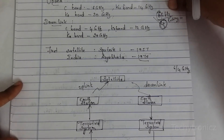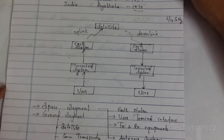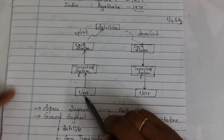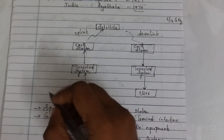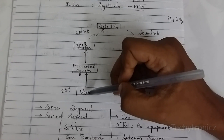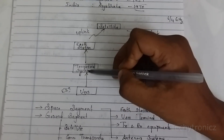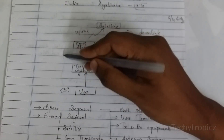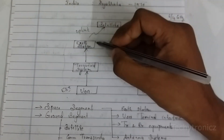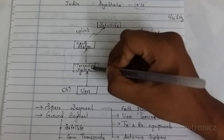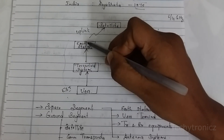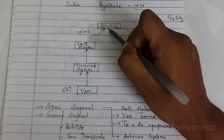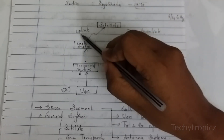We will see the block diagram of satellite communication. This is the basic block diagram. From a user at Earth Station 1, the user is transmitting a signal to the terrestrial system and then to the earth station. These are the earth station segments — that is, the ground segment. The user sends the signal to the terrestrial system, then terrestrial system to earth station. This earth station uses some antenna to transmit the signal to the satellite. From earth station to satellite, that is called uplink.